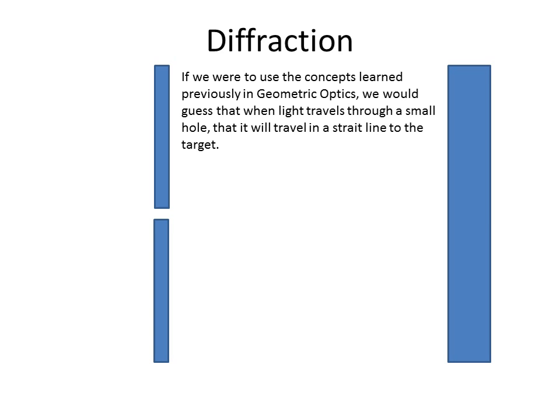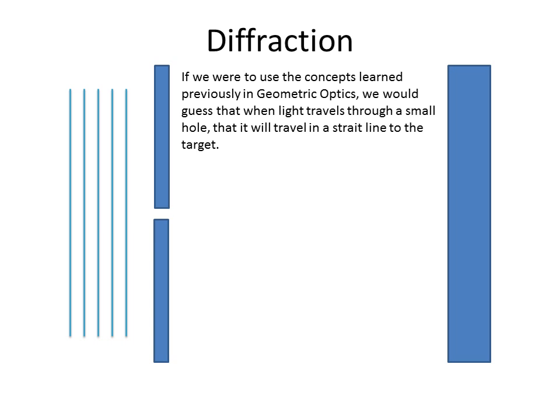We're going to shift our view of optics — moving from what's called geometric optics into wave optics. What we've previously learned in geometric optics is that if we have a small hole, this is what's implied by geometric optics: the light is going to enter the hole and come out in a nice little straight line.